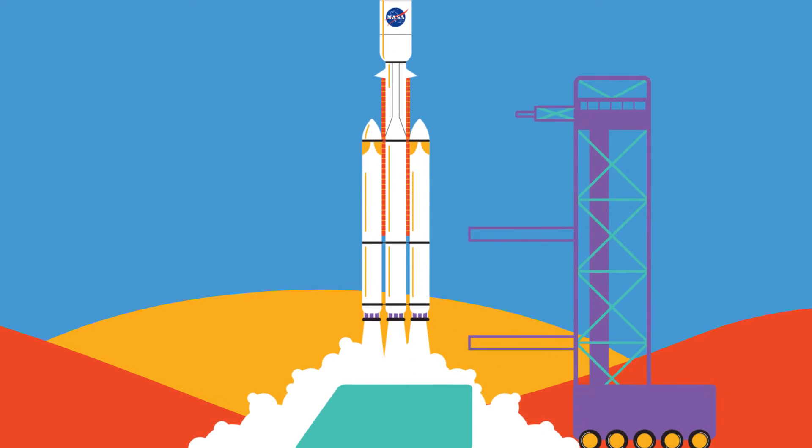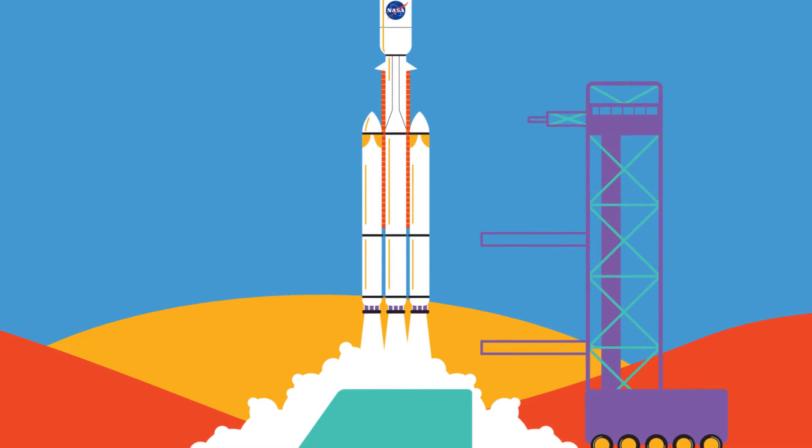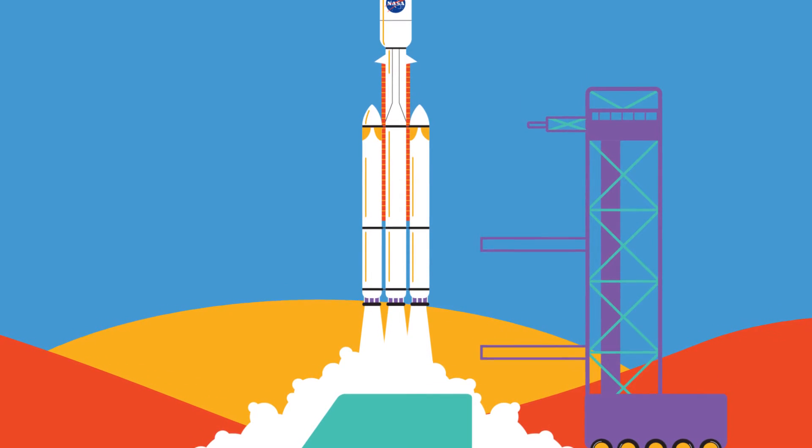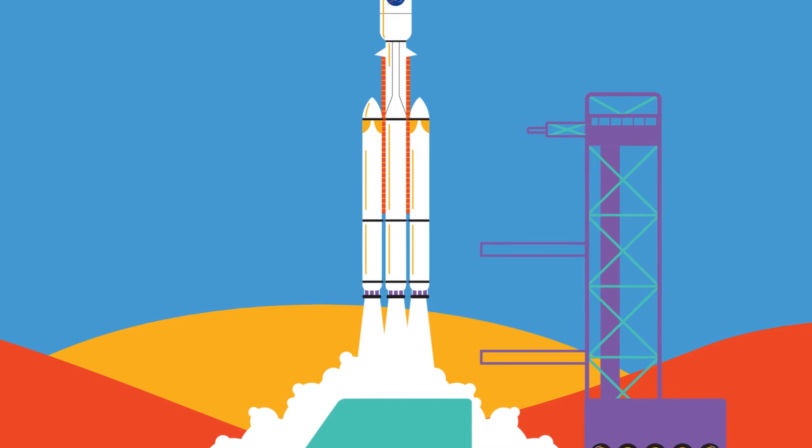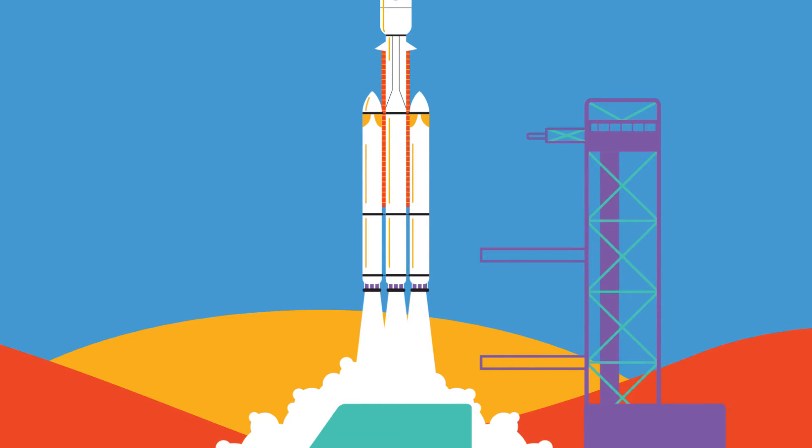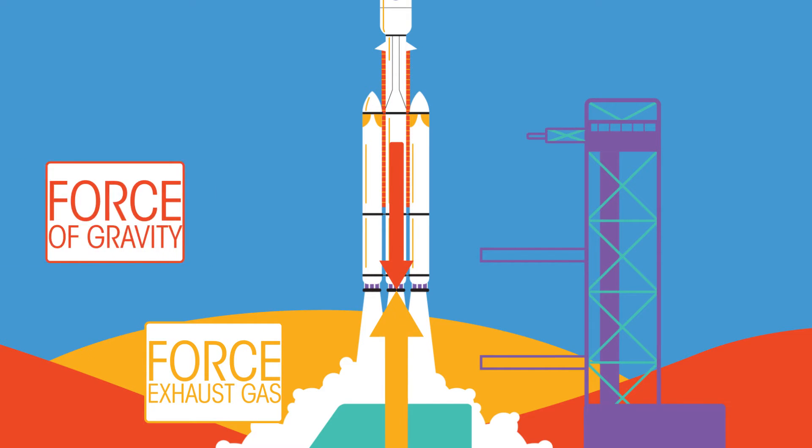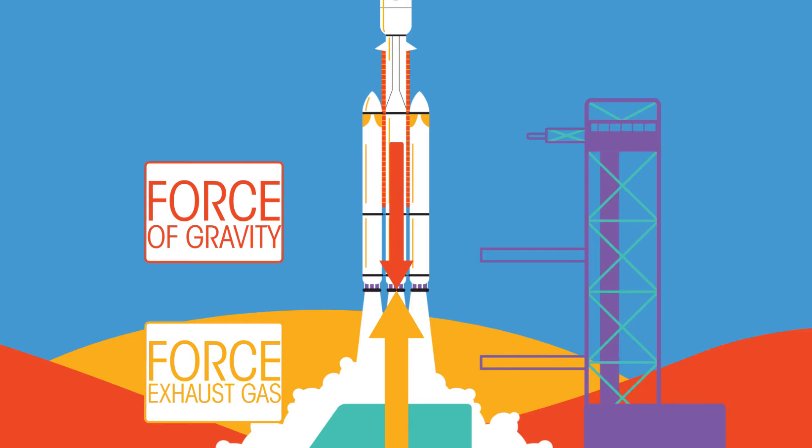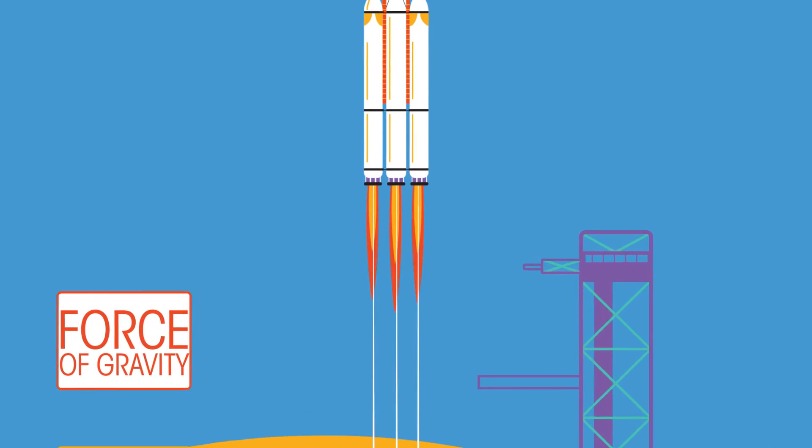At liftoff there is another pair of forces between the rocket and the earth as we saw before with the chair and the book. So there are now two forces on the rocket. If, as we hope, the force from the exhaust gases is greater than the force from the earth, its weight, we will get liftoff.